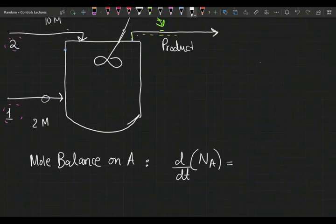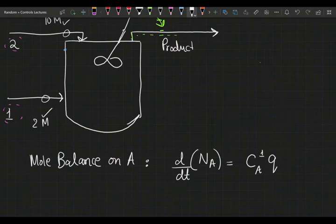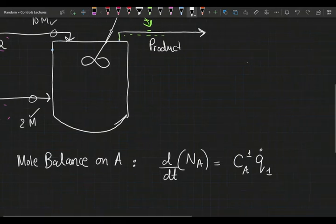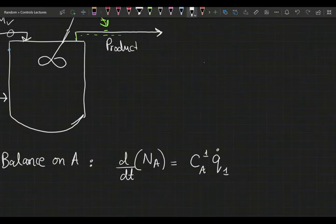The rate of change of moles of A in our system—in my vessel—how many inputs do I have? I have two streams that are coming in and I know the molarities, I know the concentration. So I'm just going to call that C_A1 times q̇_1. I'm going to be using a lowercase q to represent flow rates, volumetric flow rates. So these two are going to be the input streams.